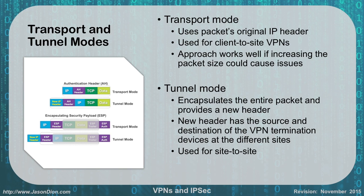With tunnel mode, on the other hand, we're going to encapsulate the entire packet and provide a new header — we're going to encrypt the packet by tunneling it. This new header is going to have a new source and destination of the VPN termination device at the different site, and it's used for site-to-site. Think of it like a letter you're going to send to your grandma in a standard envelope — you have your source in the return address area and her in the destination area.